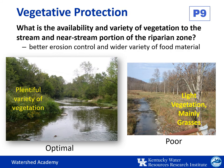Next, we'll look at vegetative protection, which refers to the availability and variety of vegetation immediately adjacent to the stream and in the near-stream portion of the riparian zone. Ideally, you'll see more than 90% of this area covered by native vegetation including trees, understory shrubs, or non-woody plants, with not much grazing or mowing. This allows for better erosion control and a wider variety of food material for aquatic organisms. In the photo on the left, there's plentiful variety of vegetation on both banks, whereas on the right, both banks have light vegetation — mainly grasses with only a few trees — and it looks like some grazing has occurred.